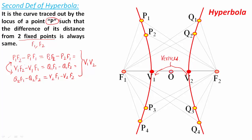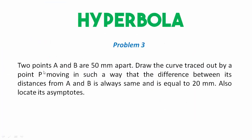The next problem I'm going to take up is based on this definition using what is called the arcs of circles method. The problem states: two points A and B are 50 millimeters apart. Draw the curve traced out by a point P moving such that the difference between its distances from A and B is always equal to 20 millimeters. Also locate its asymptotes.